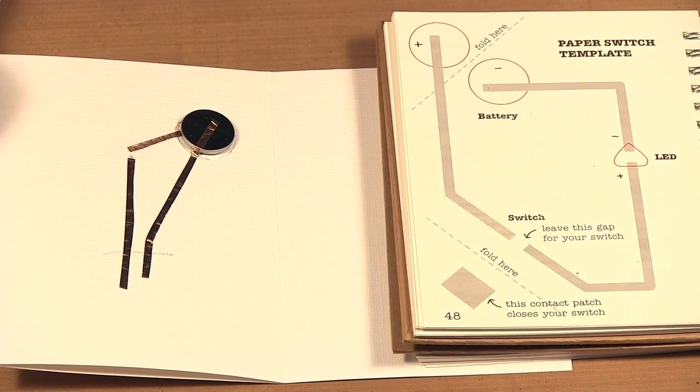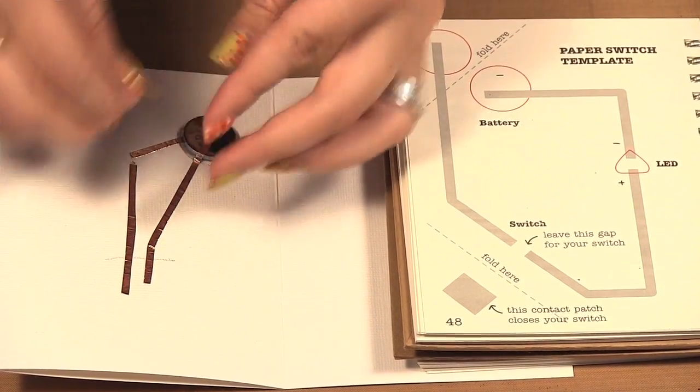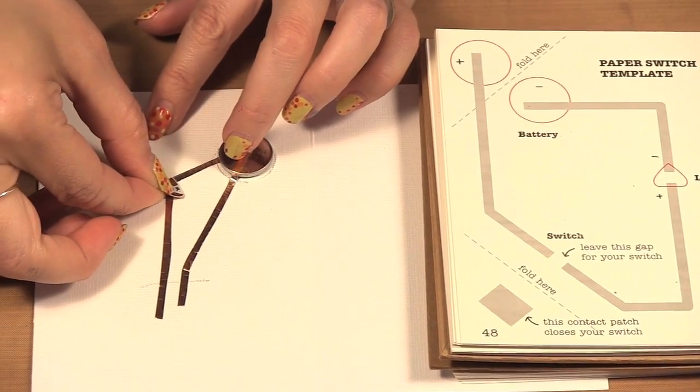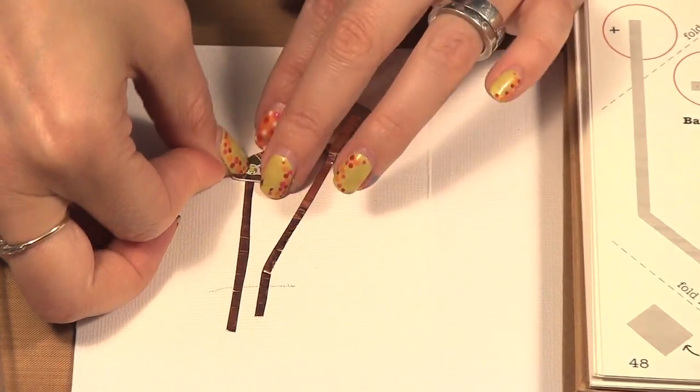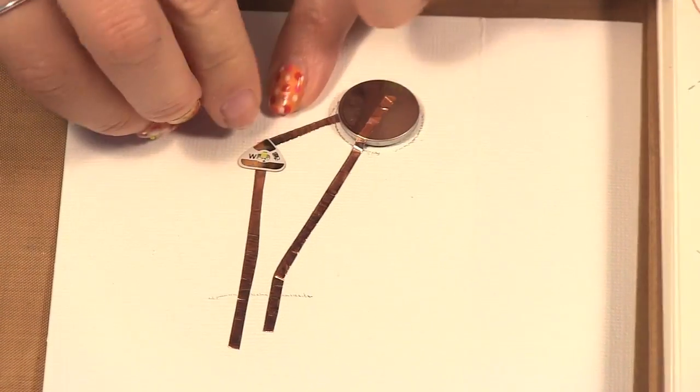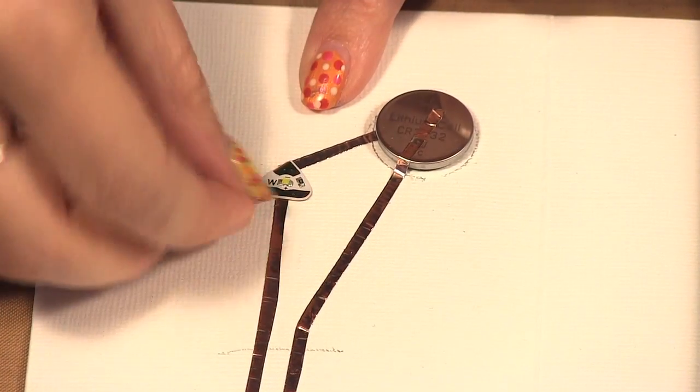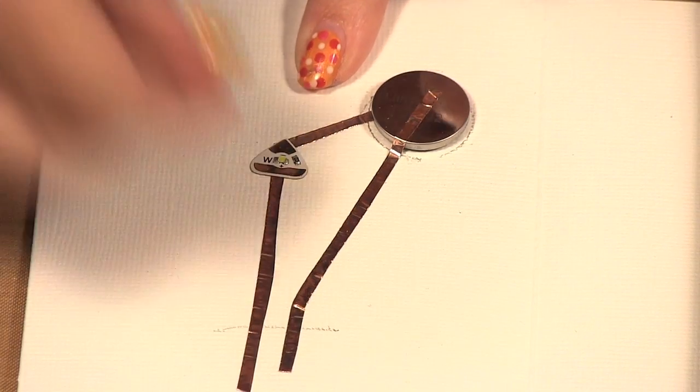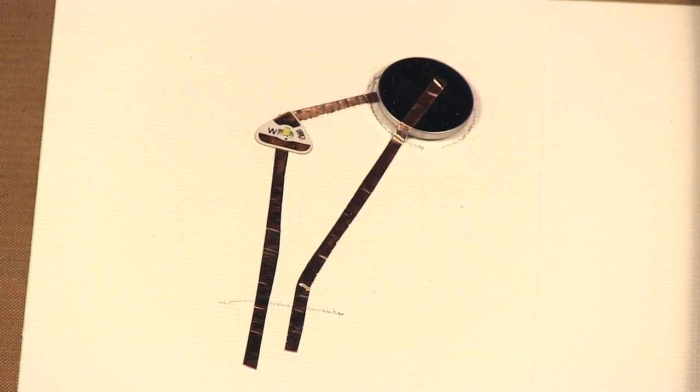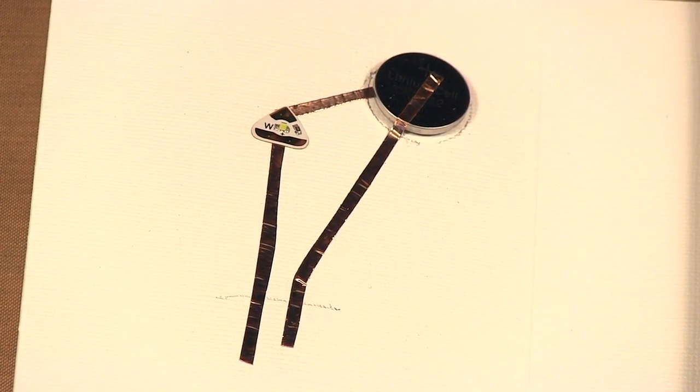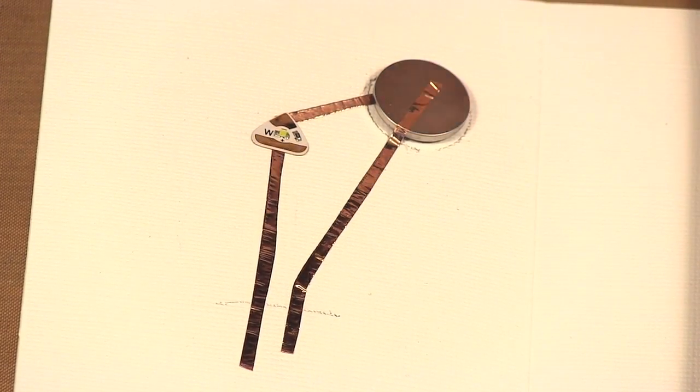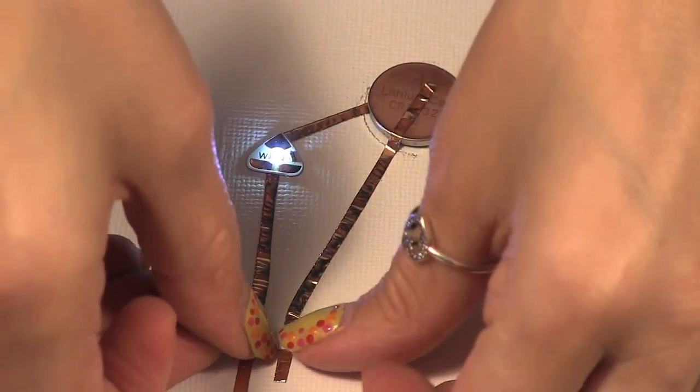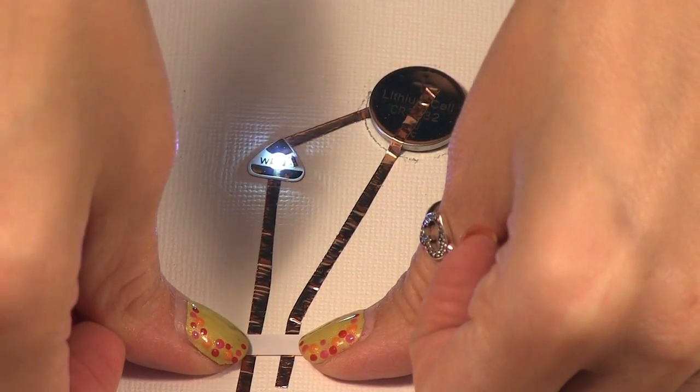So I'm going to take my light and as I said the pointy part is the negative and the flat part is the positive. So I want to make sure that the pointy part gets over that foil and the flat part gets over the foil. Then I'm going to take another piece of the tape. So this should go here and you can see the light went on. We have success.